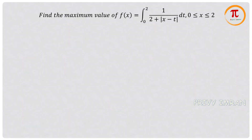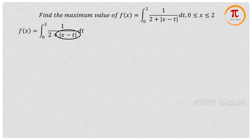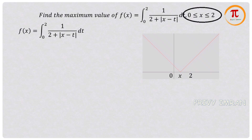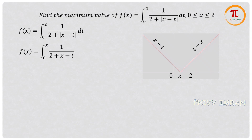Let me consider the given function. Modulus of x minus t is available, so let me split this modulus function and draw the graph for |x - t|. Considering the values 0, x, and 2 on the number line — since x lies between 0 and 2 — the right side of x gives t minus x and the left side gives x minus t. So I'll split the limits from 0 to x and x to 2.